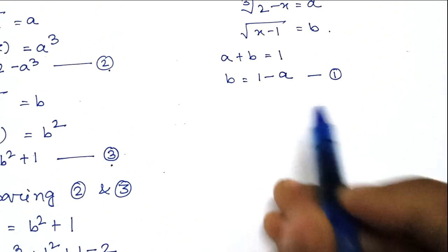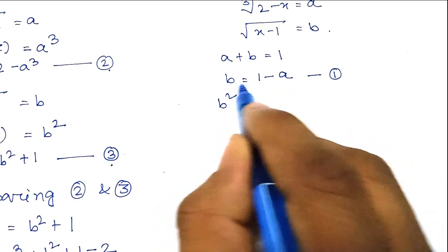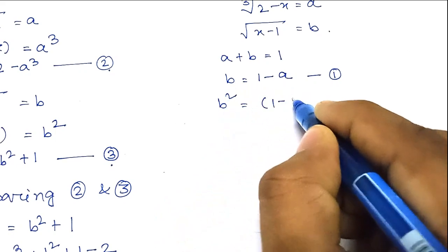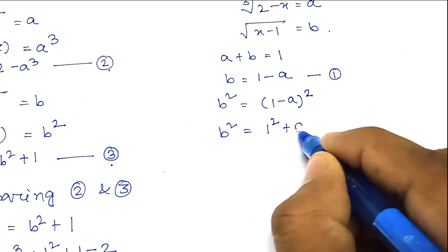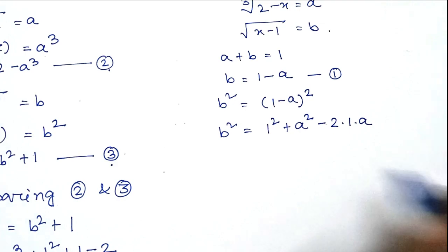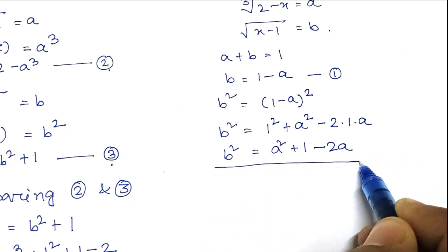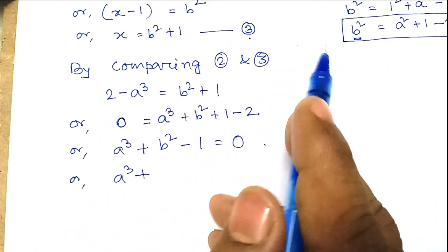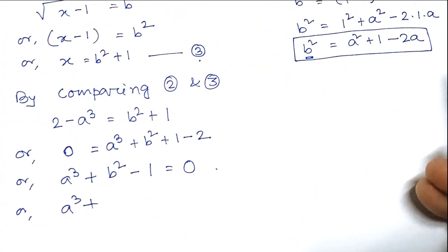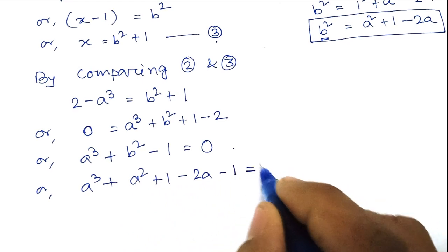From equation 1, b equals 1 minus a. To find b squared, we square both sides: b squared equals (1 minus a) squared, which expands to 1 squared plus a squared minus 2 times 1 times a, giving us a squared plus 1 minus 2a. We substitute this expression for b squared into the equation: a cubed plus a squared plus 1 minus 2a minus 1 equals 0.